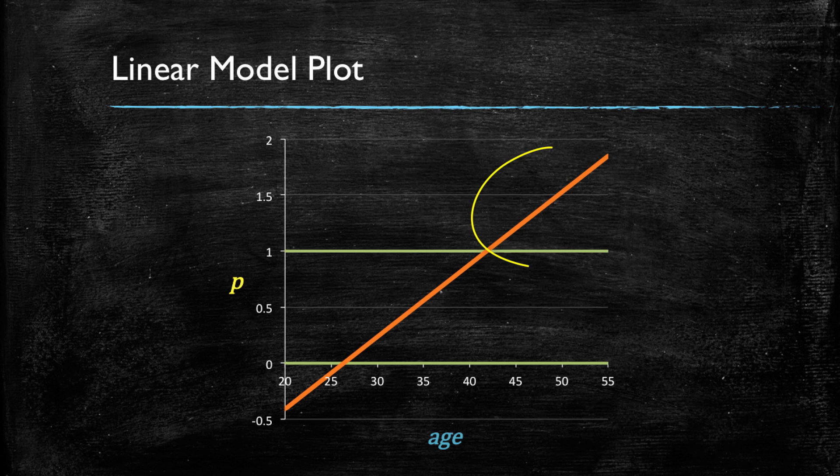Meanwhile, if the customer has more than 43 or 44 years of age, the probabilities are greater than 1. This model is just not working.